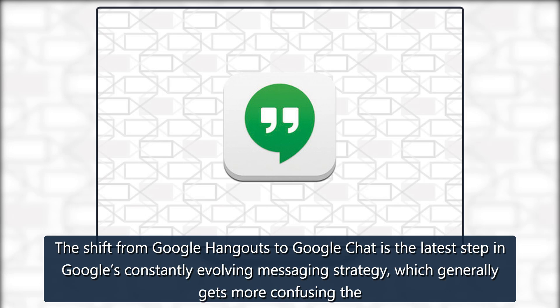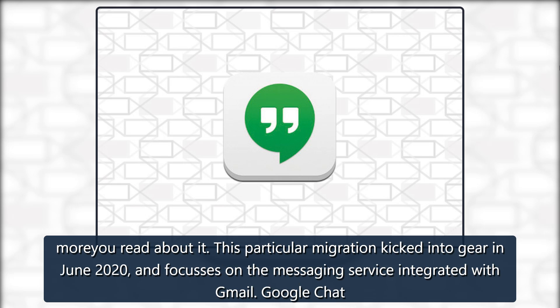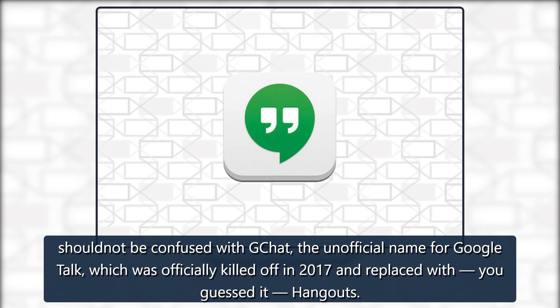The shift from Google Hangouts to Google Chat is the latest step in Google's constantly evolving messaging strategy, which generally gets more confusing the more you read about it. This particular migration kicked into gear in June 2020, and focuses on the messaging service integrated with Gmail. Google Chat should not be confused with GChat, the unofficial name for Google Talk, which was officially killed off in 2017 and replaced with — you guessed it — Hangouts.